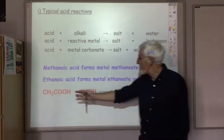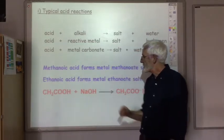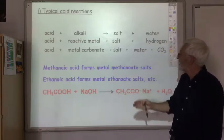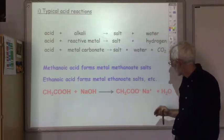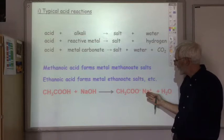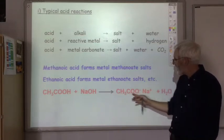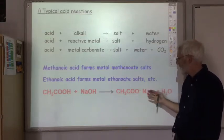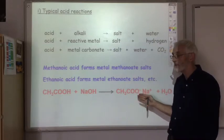So, for example, here we've got ethanoic acid, reacting with sodium hydroxide. So, acid and alkali produce a salt and water. Here's the salt. This is the ethanoate ion and sodium ion, so it's sodium ethanoate. That's the name of the salt.